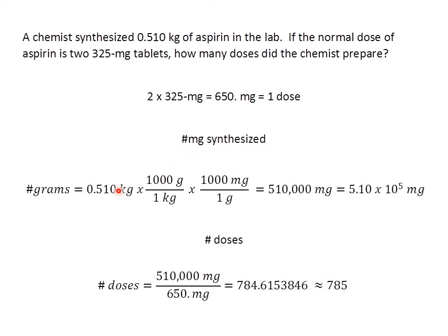Now we'll convert the kilograms to milligrams. For one kilogram we have a thousand grams, so we use that conversion factor to get rid of kilograms and get into grams. Then once we're in grams, we convert to milligrams because one gram is equal to a thousand milligrams. So 0.510 kilograms times 1,000 grams divided by one kilogram — kilograms cancel — then times 1,000 milligrams divided by one gram — grams cancel. Plugging in: 0.510 times 1,000 times 1,000 gives me 510,000 milligrams.